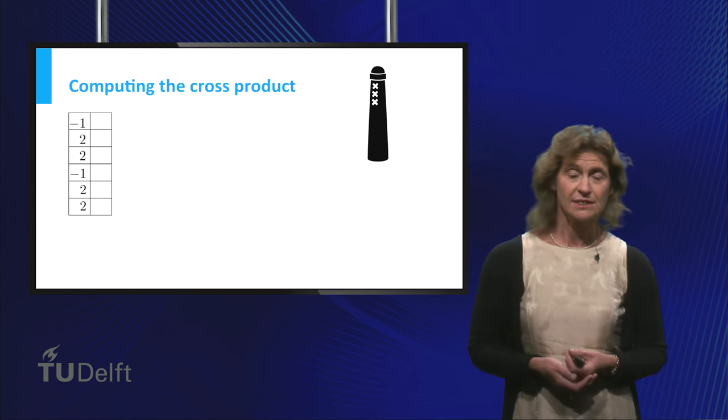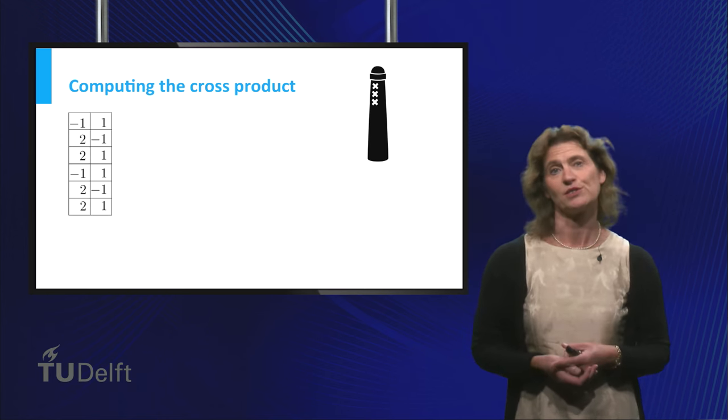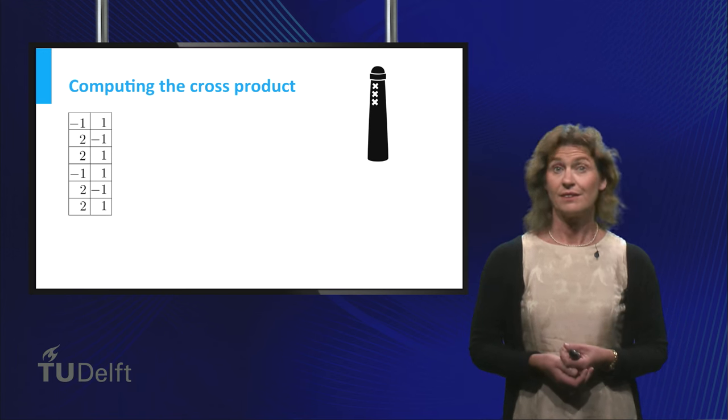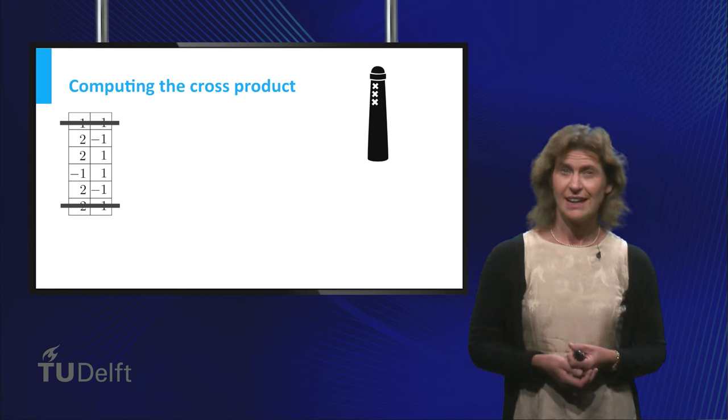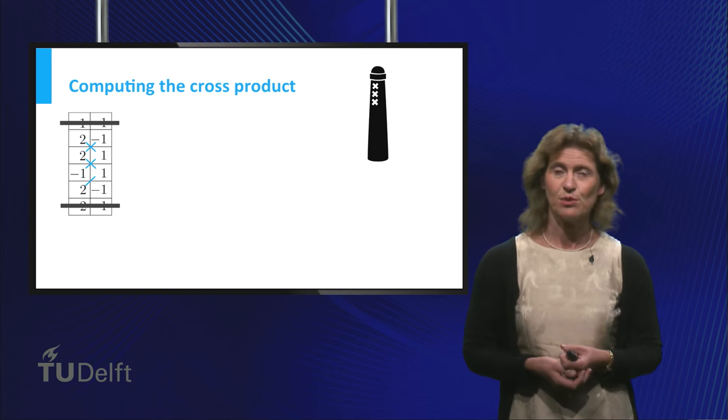Then do the same thing for the second column, but now with the vector v. Then remove the first and last rows, and put three crosses in the table as shown.